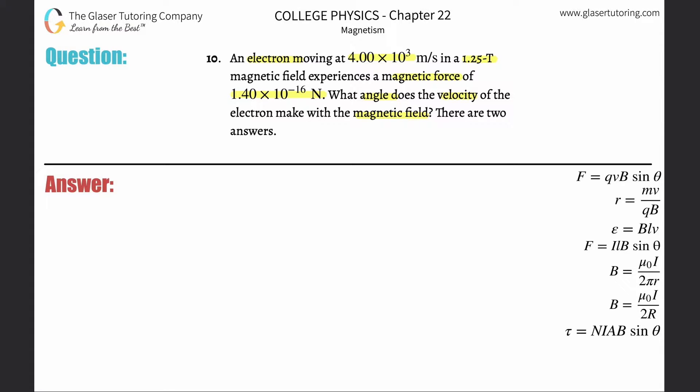First of all, if we notice everything we're given, we're going to be using the formula that the force on a moving charged particle will equal the charge, the magnitude of the charge of that particle, multiplied by the velocity of that particle, multiplied by the magnetic field that particle is experiencing as it is moving, multiplied then by the sine of the angle between the velocity vector and the magnetic field vector.